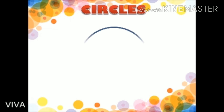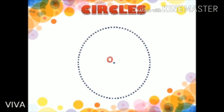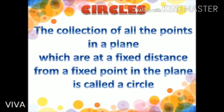In the first place, let us see what a circle is. A circle is a mathematical figure made up of a collection of points in a plane at a fixed distance from a fixed point. The characteristic points in the definition are: the collection of points at a fixed distance from a fixed point in one plane.